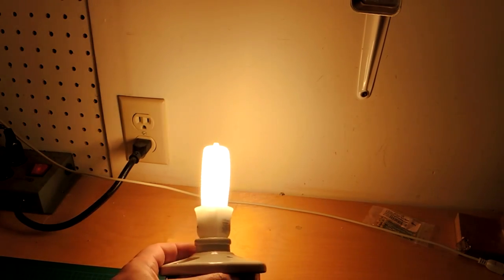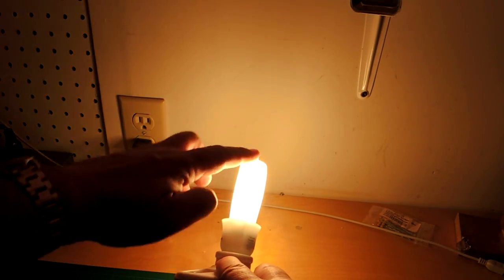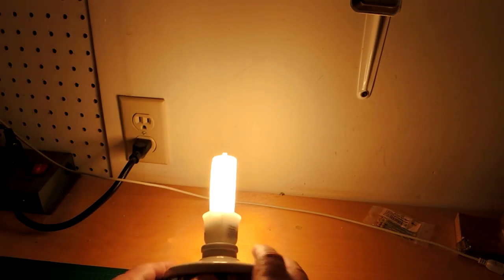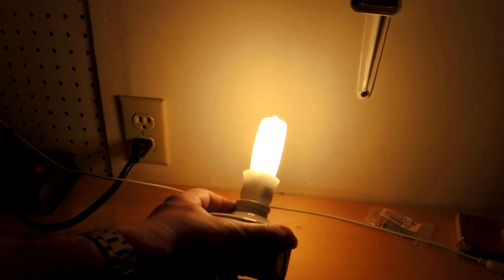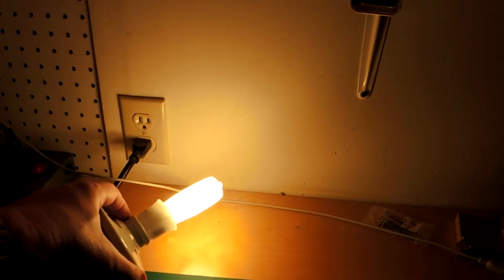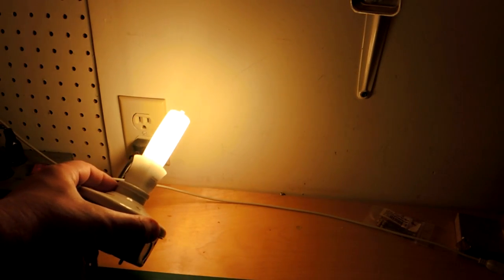So one of the challenges with the slim style is it has this black stripe, basically. I presume it's an artifact of how the bulb is constructed. You can see as it moves along the wall here, there's a darker area. And that's not really a desirable attribute of a light bulb.